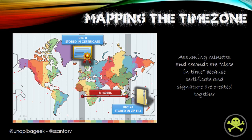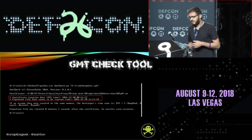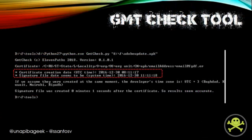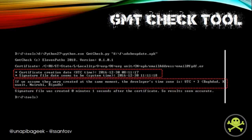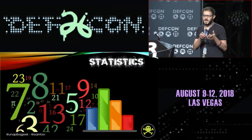Let's have another example: imagine that the certificate has been created four seconds before the compilation. The last file in the APK gets the date on the left, and the certificate has the date on the right — UTC on the right side, and the local time with the time zone of the person on the left side. So that means this person is maybe in GMT plus one. Assuming minutes and seconds are close in time when you create the certificate and compile the application, we have information enough to deduce the GMT or time zone of the person compiling it. We created a Python tool that checks the certificate creation date in UTC time and the signature file date. If we assume they were created at the same moment, the developer's time zone would be UTC plus three, because the signature file was created one second after the certificate.